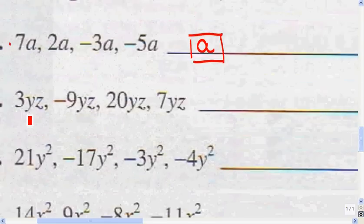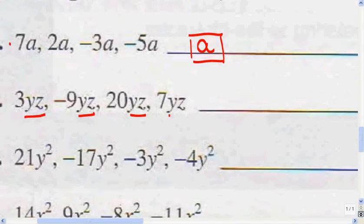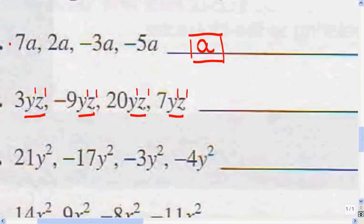Here I've got yz, yz, yz, yz. The variables are the same, and the exponents are all to the first power — when there's no exponent, the exponent is understood to be 1. So I can combine all these terms. 3yz minus 9yz: when the signs are different, you subtract. 9 minus 3 is 6, giving us 6yz. Since the sign of the bigger number is negative, the answer is negative 6yz.